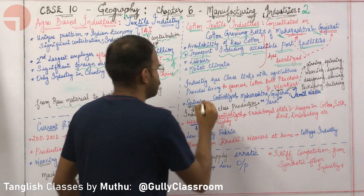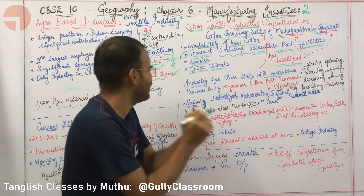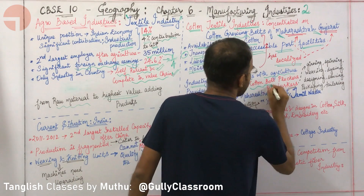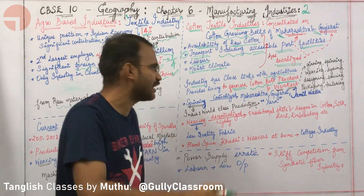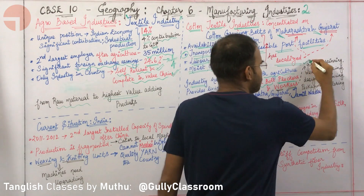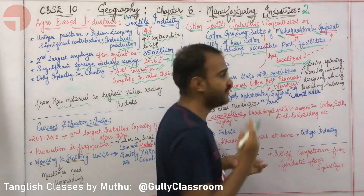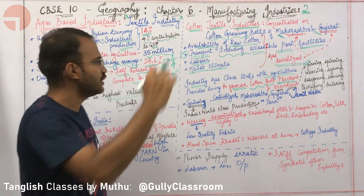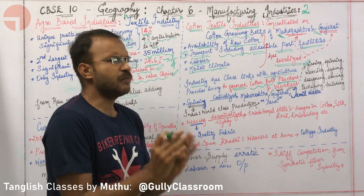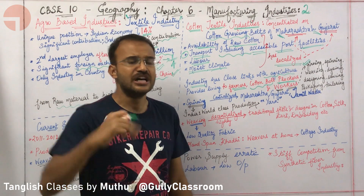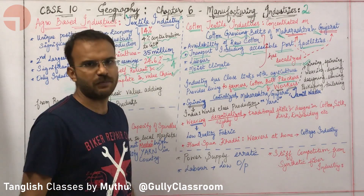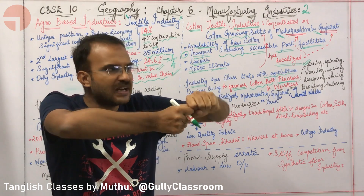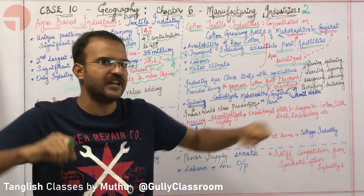The cotton textile industry has very close links with agriculture. It gives jobs to farmers growing cotton, and to workers in ginning, spinning, weaving, dyeing, designing, packaging, and tailoring. The most important processes in cotton are spinning and weaving — spinning converts cotton fibers to yarn.